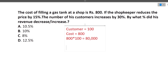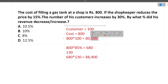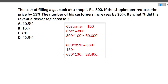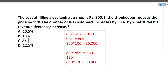After a 15% price decrease, 85% of Rs. 800 remains, so the new cost is Rs. 680. Customer count increases by 30% from 100 to 130. New total revenue is Rs. 680 times 130 equals Rs. 88,400. Earlier it was Rs. 80,000, now it is Rs. 88,400. The percentage increase is approximately 10.5%. So option A, which is 10.5%, is the correct answer.